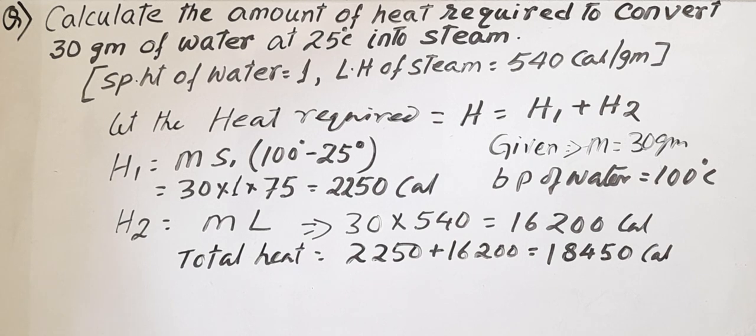So heat gain is M×S×(T2 - T1), where T2 is 100 degree centigrade and T1 is 25 degree centigrade. When you heat to 100 degree centigrade, to convert to steam, the temperature remains constant at 100 degree centigrade until all water molecules are completely converted to steam.